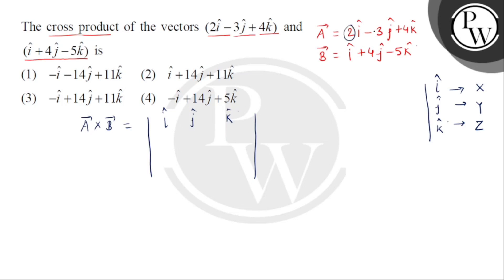minus 3 and 4. So यह अगर 2, minus 3 and 4. And b vector के components हैं 1,